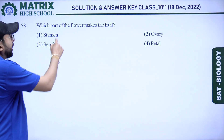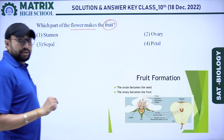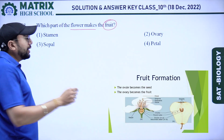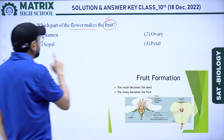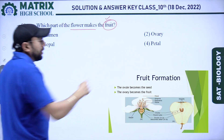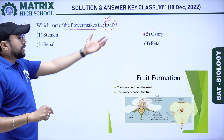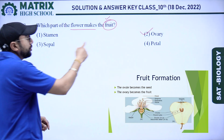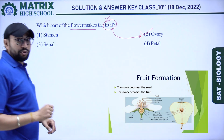Next question: which part of the flower makes fruit? Options: stamen, ovary, sepal, and petal. Ovary is the right answer because the ovary converts into fruit and the ovule converts into seed. So the right answer is ovary.